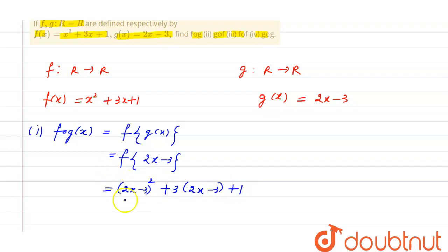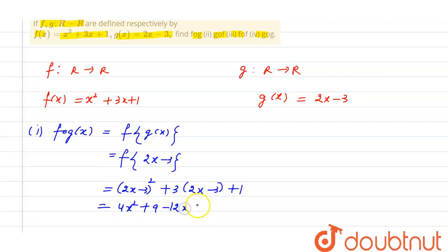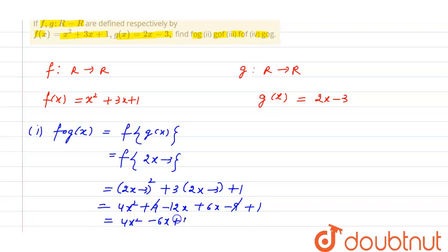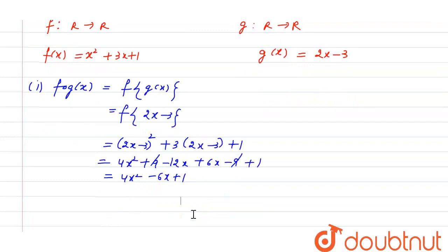Now we can open the bracket. (2x minus 3)² gives 4x squared minus 12x plus 9. Then 3 into (2x minus 3) gives 6x minus 9. Adding plus 1, we can cancel the 9s, and we get 4x squared minus 6x plus 1, which is the result of fog.